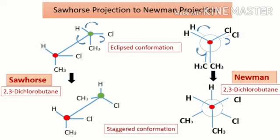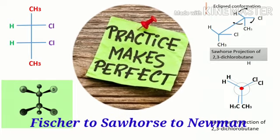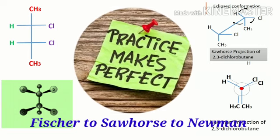As mentioned at the start of this video, both Newman and Sawhorse projections are useful for conformational study. By rotating the carbon-carbon bond, we can get different conformations of an organic molecule. In this slide, the eclipsed and staggered conformations of 2,3-dichlorobutane are shown in both Sawhorse and Newman projections. Organic chemistry can be mastered only through practice, so try solving more examples by watching this video.